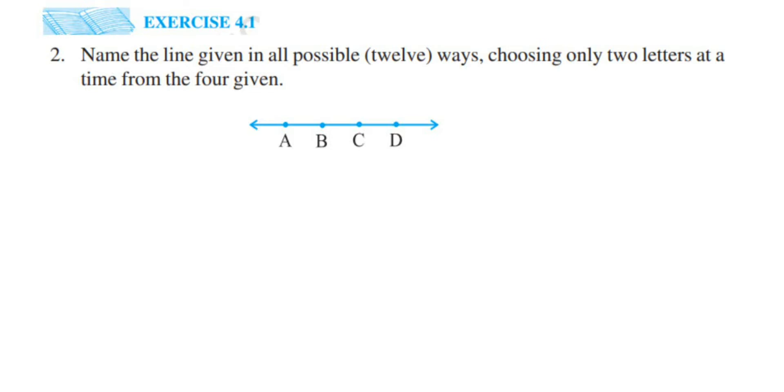Hey everyone, here is a question from Exercise 4.1, second question. The chapter is basic geometrical ideas of Class X. The question is, name the line given in all possible ways. So there are 12 ways possible, choosing only two letters at a time from the four given points.